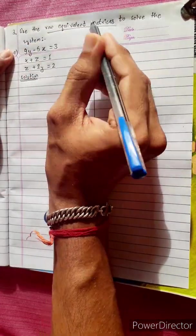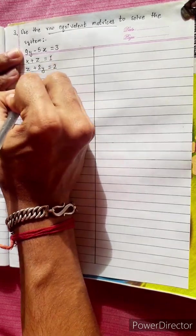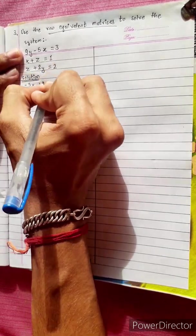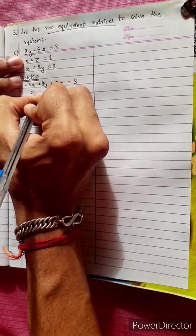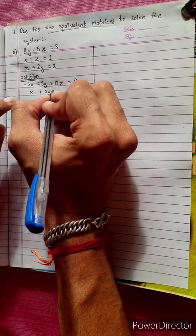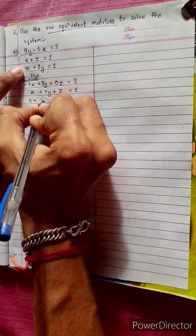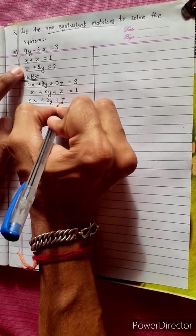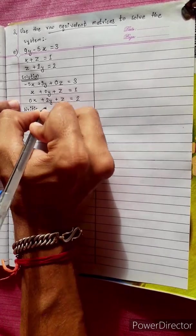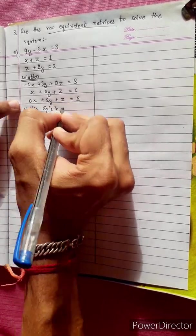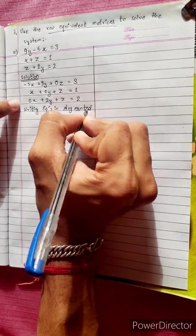This is the equivalent matrix. We have: negative 5x plus 9y plus 0z equals 3; x plus 0y plus z equals 1; and 0x plus 2y plus z equals 2. Now we have to write the equations in augmented form.